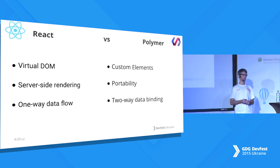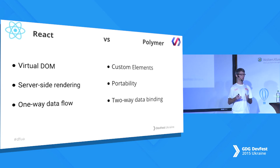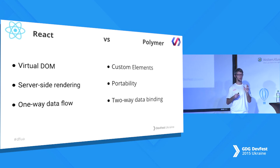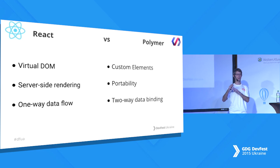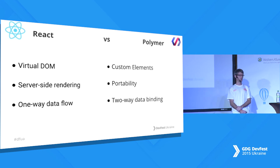React uses virtual DOM — a way to render your HTML from your models. React knows about your models, and every time you change them, it compares and knows exactly which part has changed. It will render just the smallest part of HTML that needs to be re-rendered — it knows you changed just the value of one input and doesn't need to re-render the rest of the page. Polymer uses custom elements, which is a different approach to the same goal.